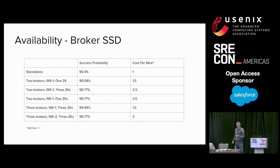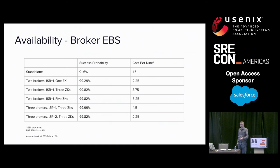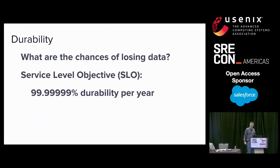We can get to four nines by using SSDs. SSDs have a lower chance of failure rate and significantly boost our availability — they get us to our targeted success of four nines. Another option is to run EBS. EBS is more expensive, but the failure rate is only 0.2% based on what AWS says.